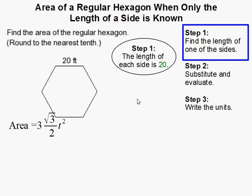That's why we only have to find the length of one of the sides. Because by definition, regular means all the sides are equal, all the angles are equal.